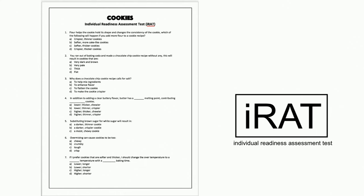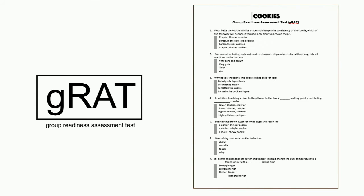You're going to complete this GRAT together. The objective is to get as few numbers scratched off as possible - you want to answer the question right the first time. Don't just scratch down all the way; choose which answer you think is correct. You can debate answers based on what your individual readiness assessment showed, and see if you can get the fewest scratches to correct answer ratio.